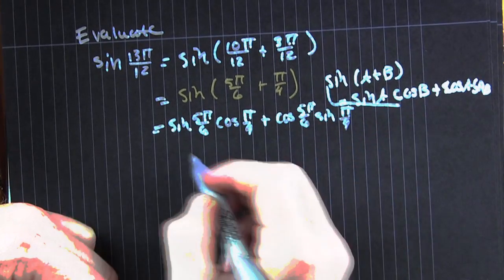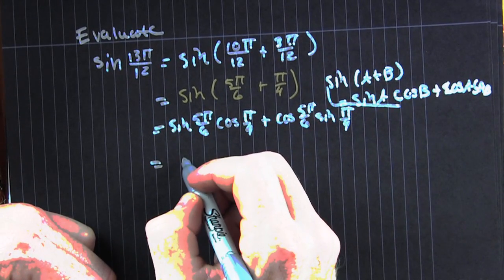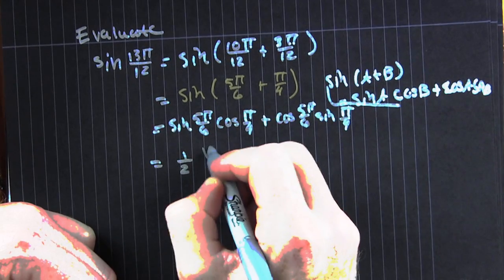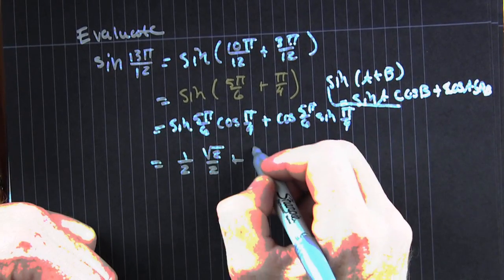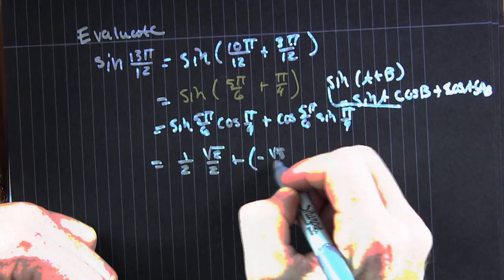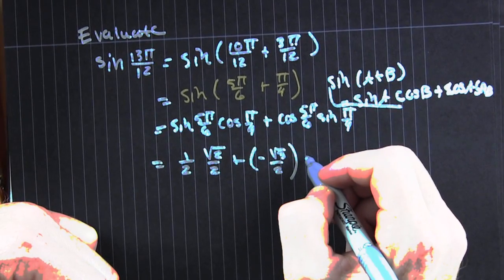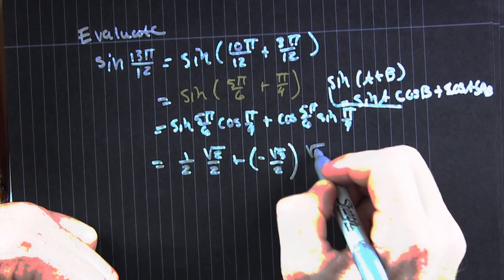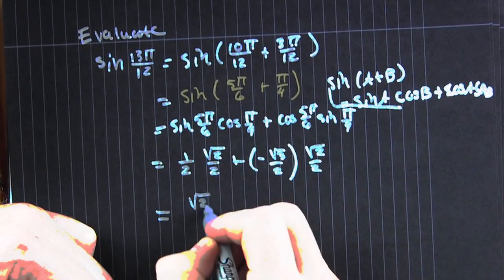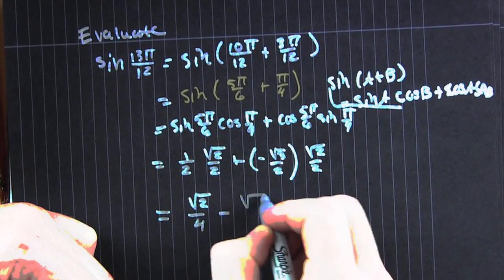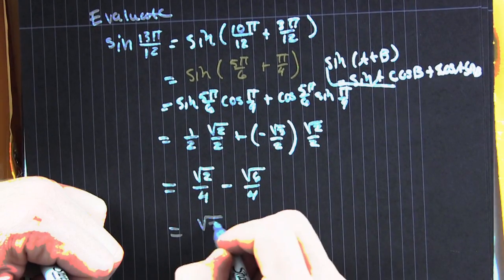Now we need to evaluate those guys. What's the sine of 5π over 6? Half. It's in the second quadrant, it's positive. And then the cosine — the over 4's, people know those. That one's negative because it's in Q2. Now let's clean up those fractions. One last step — they have a common denominator.